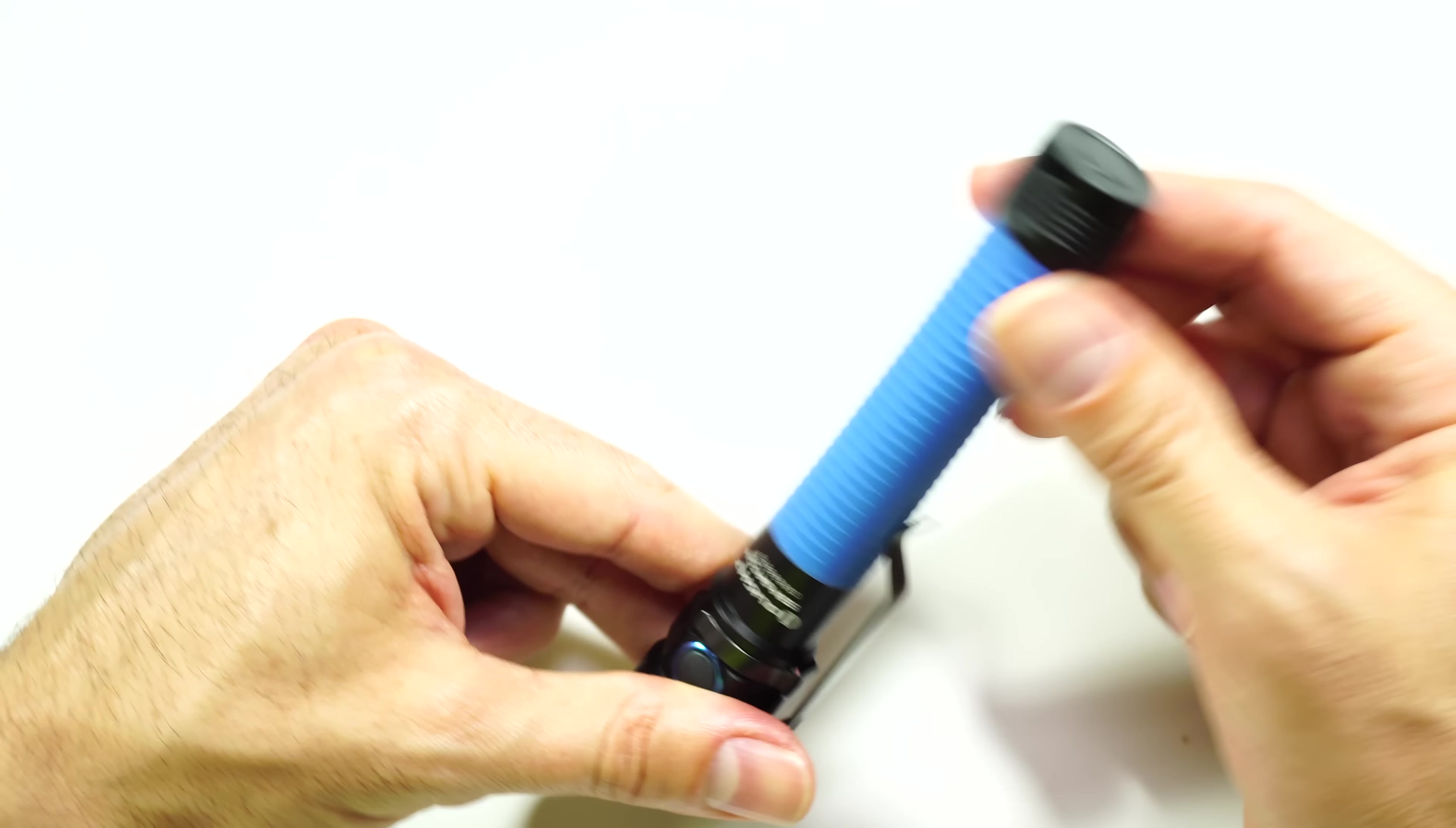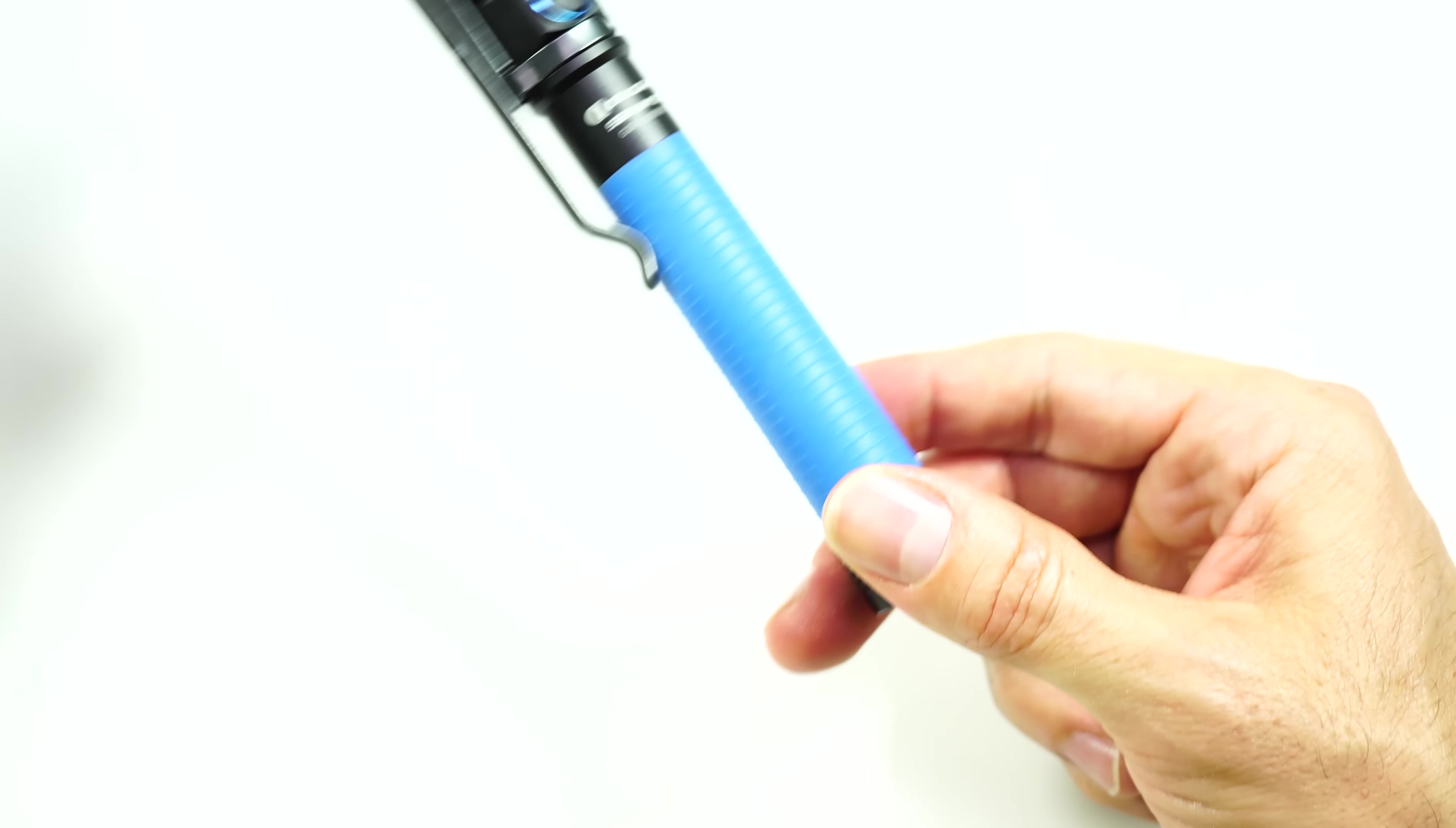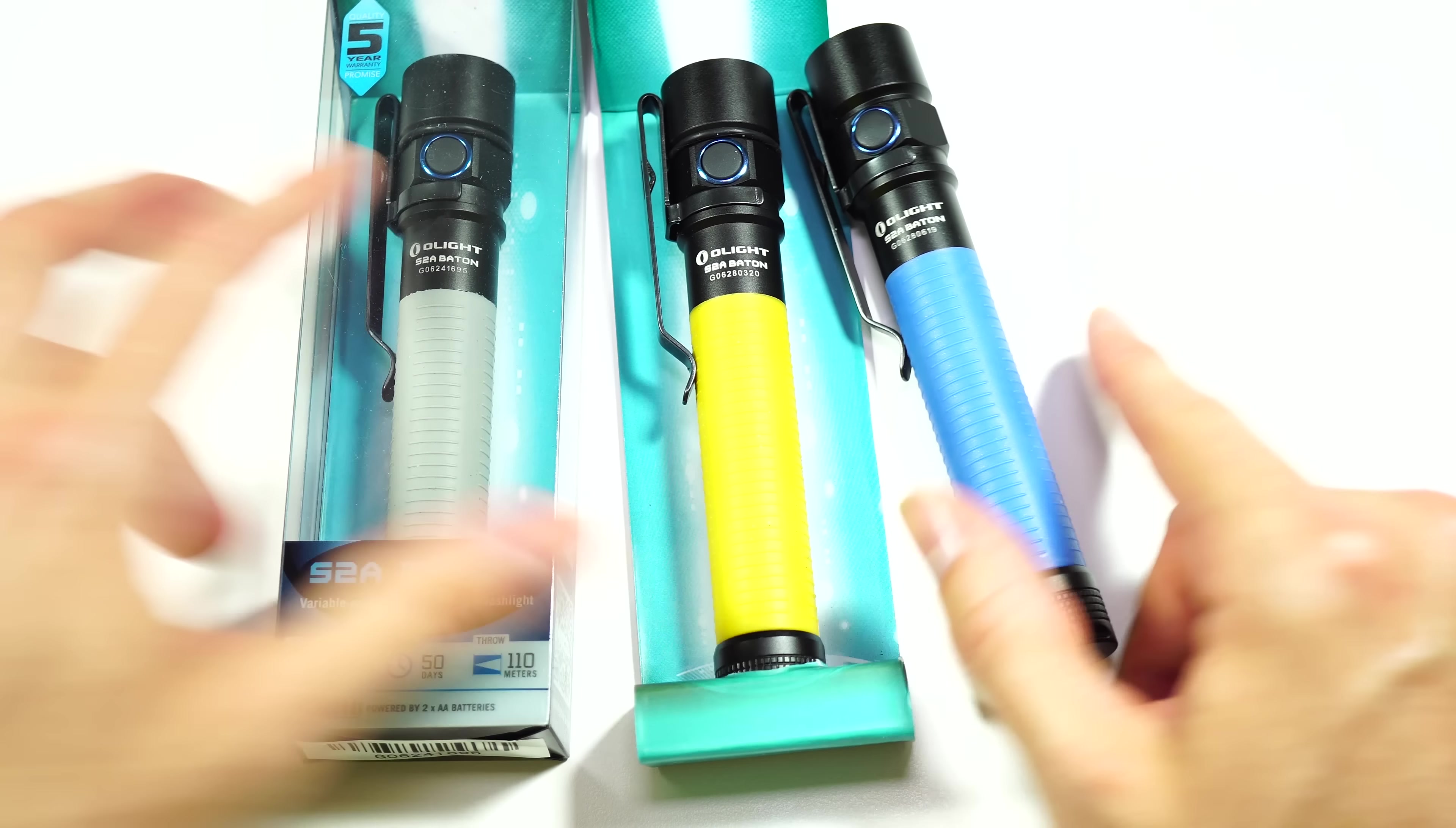Let me show you the construction of it now. The back, like I mentioned, the tail cap, it comes off, it is flat. You can tail stand it, no problem. Forward to that is that siliconized grip, and here's something that's kind of fancy about that grip. Let me bring three of these in here. Watch this. The grips glow.